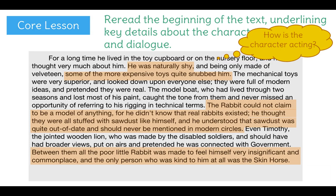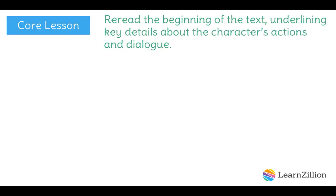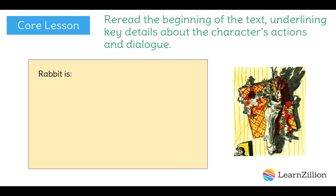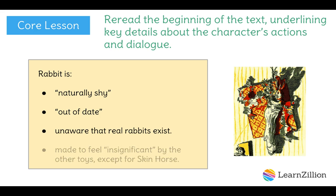Down here at the bottom, it continues: 'Between them all, the poor little rabbit was made to feel himself very insignificant and commonplace, and the only person who was kind to him at all was the skin horse.' So when the toys snub Rabbit, they make him feel insignificant, or unimportant. Of course, Rabbit must be all shy and embarrassed around everyone. But that last line — the only person who was kind to him — tells me that Rabbit does find a friend here at the beginning of the story. That's important to note because I'm sure Rabbit will be speaking with the skin horse character soon. So to summarize: Rabbit is naturally shy, out of date, unaware that real rabbits exist, and made to feel insignificant by the other toys except for the skin horse.